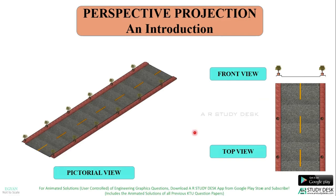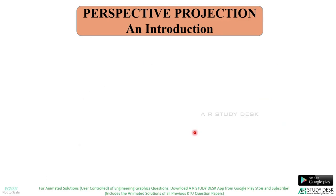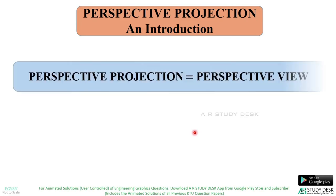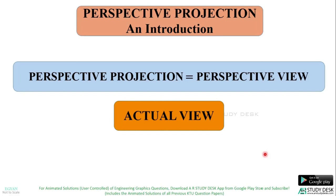Now let us see what is Perspective Projection. Perspective Projection is the same as Perspective View, whereas Isometric Projection and Isometric View were different. So if you use Perspective Projection or Perspective View, both mean the same. We will have only a brief introduction to Perspective Projection, which means we will not be having a detailed explanation. So Perspective Projection means it is the actual view of the object. What is meant by actual view? Let us study that with the help of an example.